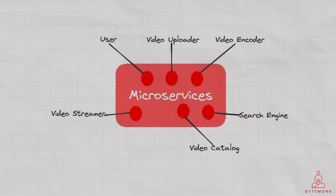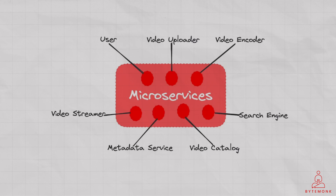The Video Streamer microservice would handle video streaming to users. It would retrieve the appropriate video from the storage service and serve it to the user over HTTP. It could use a content delivery network like CloudFront for this purpose. The Metadata microservice stores and retrieves the metadata for each video, such as title, description, tags, and categories. The metadata can be stored in a NoSQL database such as MongoDB or Cassandra for fast and efficient retrieval.